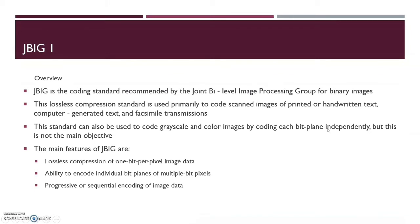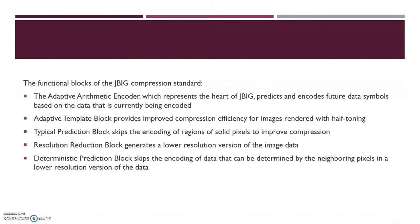Moving ahead, we have JBIG-1, proposed by the Joint Bi-level Image Processing Group for binary images. It has different techniques for compressing different elements of a document — maybe there is handwritten text, an image on the page, or some other things — and it will use lossless compressions for all of these. This is the functional blocks of JBIG-1. It uses an adaptive template block for halftone images to improve efficiency there, and a typical prediction block which helps to improve compression further.